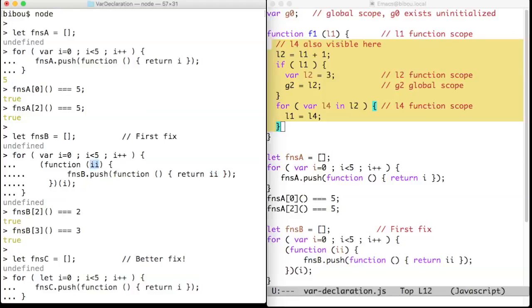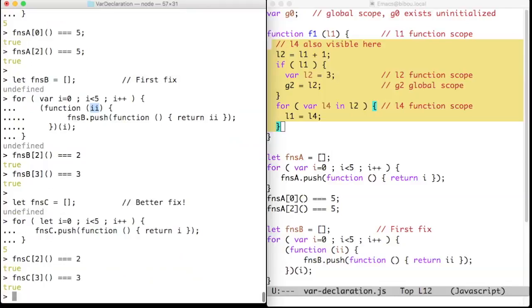With ECMAScript 2015, you can directly use the let directive, as in FNSC, and at every iteration, a new binding with i and its value is created, and that binding is closed by the closure here. So everything is ok.